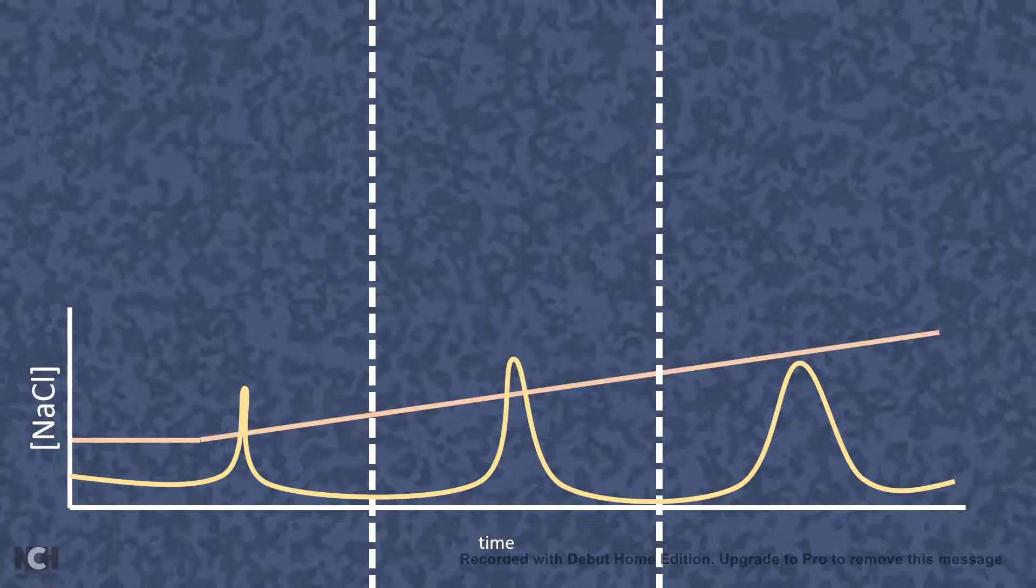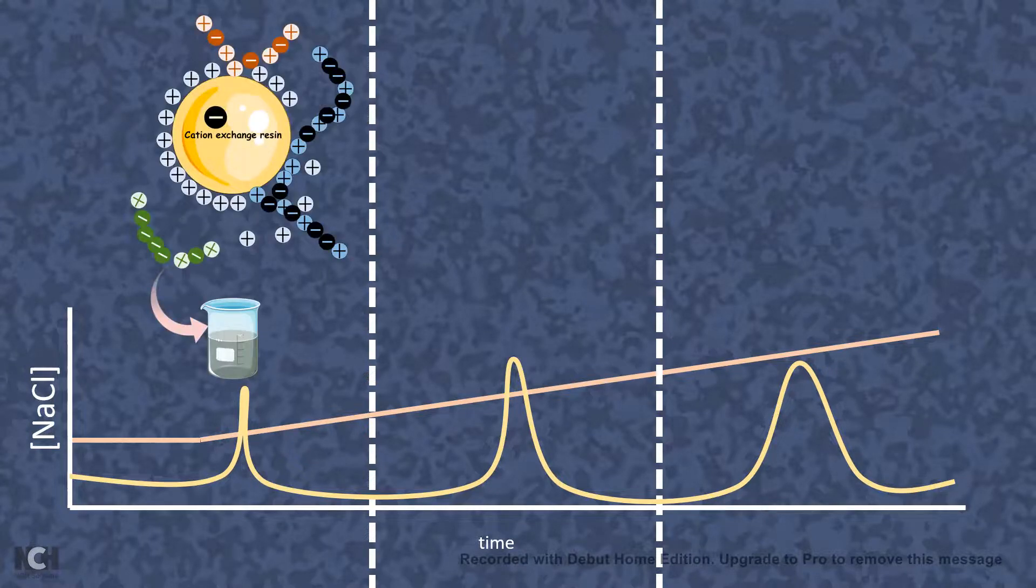So we can increase the concentration of NaCl in a gradient-like fashion, and at different time points, different peaks or different fractions are collected. So let's try to understand it pictorially. Let's say these three proteins are bound to the cation exchange resin. Now these three proteins have a different degree of positive and negative charge.